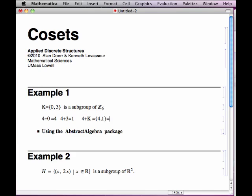So in fact, even though the order of the numbers appears differently, and we do the computation, 1 plus K and 4 plus K are the same set. So cosets can be represented and generated from different elements.